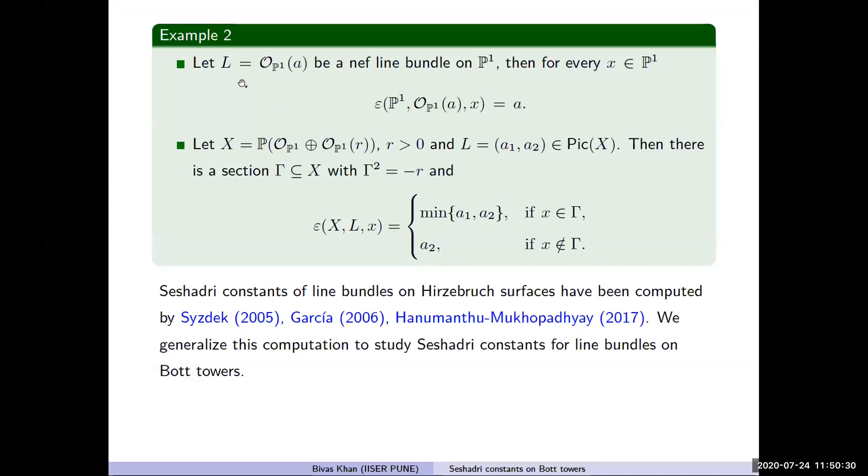The first stage of a Bott tower is P^1 and the Seshadri constant on P^1 is known. The second stage is the Hirzebruch surface, the projectivization of O_{P^1} direct sum O_{P^1}(r). If we take a line bundle L as a tuple (a_1, a_2) with respect to a suitable basis of the Picard group, then there is a section gamma with self-intersection minus r, so that the Seshadri constant is given as follows: for points on gamma it is minimum of a_1 and a_2, otherwise it is a_2. Seshadri constants for Hirzebruch surfaces have been computed by various authors like Steffens, Garcia, Roé, and Mukherjee. We would like to extend this computation to higher stages of Bott towers using the extra structure.